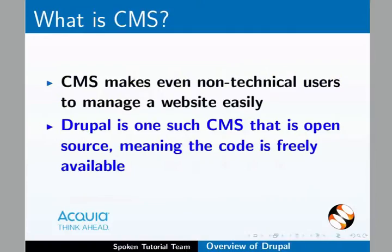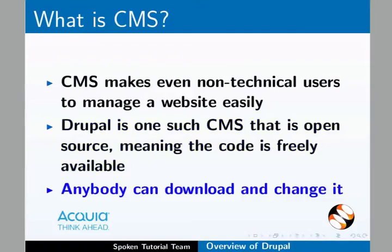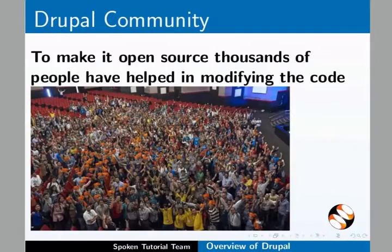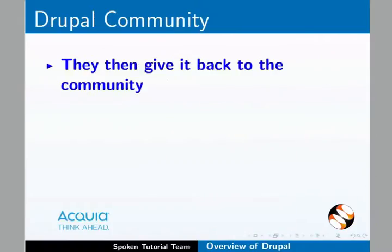Drupal is one such CMS that is open source, meaning the code is freely available. Anybody can download and change it. Drupal was founded in 2000 by Dries Butat when he was a student. Since making it open source, several thousands of people have helped in modifying the code and give it back to the community with small improvements.